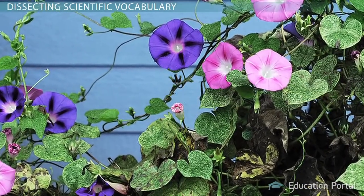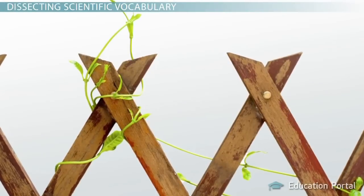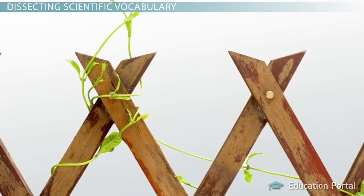Think about vining plants like beans, grape vines, and the common morning glory. These plants can climb fences and trellises by coiling their shoots around any object that they touch.